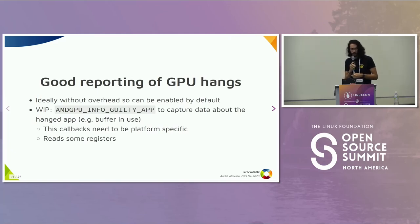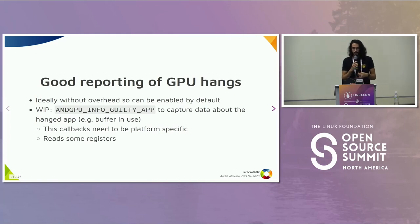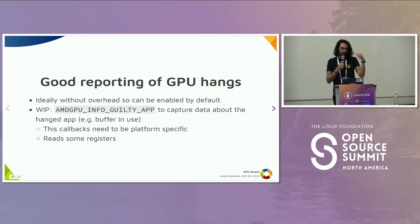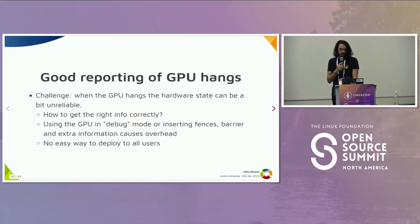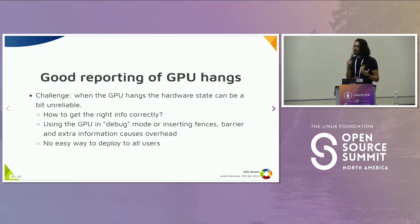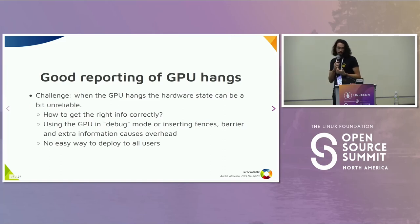One thing I worked on was a new AMD GPU info operation I called GPU app, where you can capture data about what hung the GPU — like capturing the address of the buffer that was running on the GPU at that time. Of course this callback needs to be platform specific because I was reading some registers. But it's not very reliable because once the GPU hangs, you don't know what the firmware will do — we don't have a lot of control on that side. The challenge is how to get the right information correctly in a reliable way.